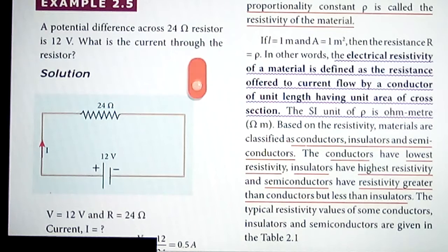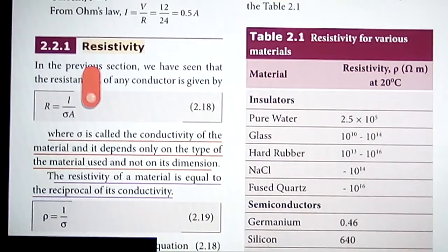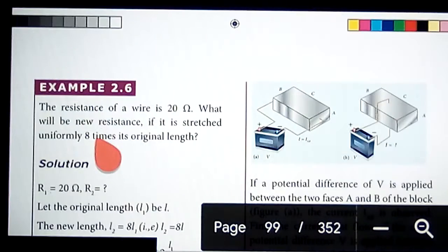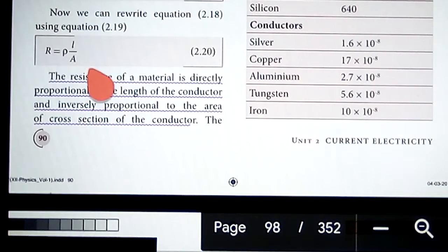This comes from the expression R equals rho L by A. So if L equals 1 and A is also equal to 1, then R will be equal to rho.